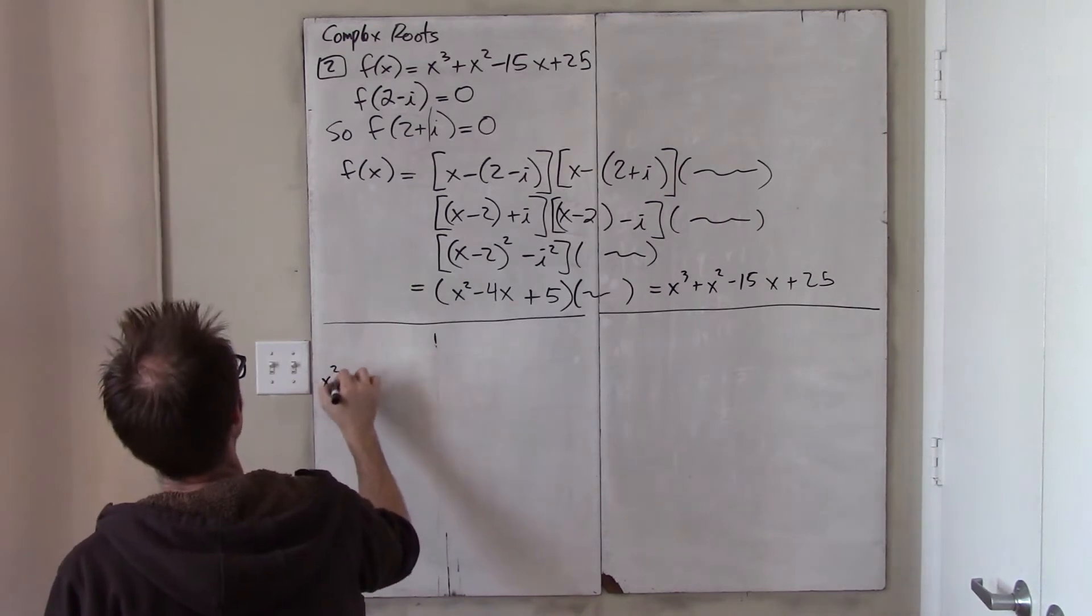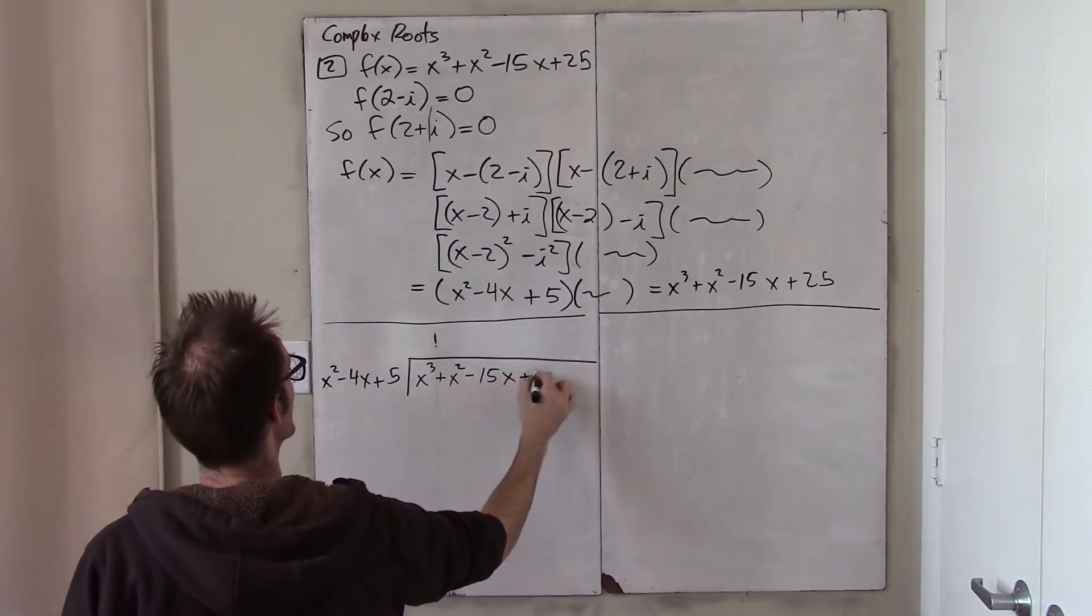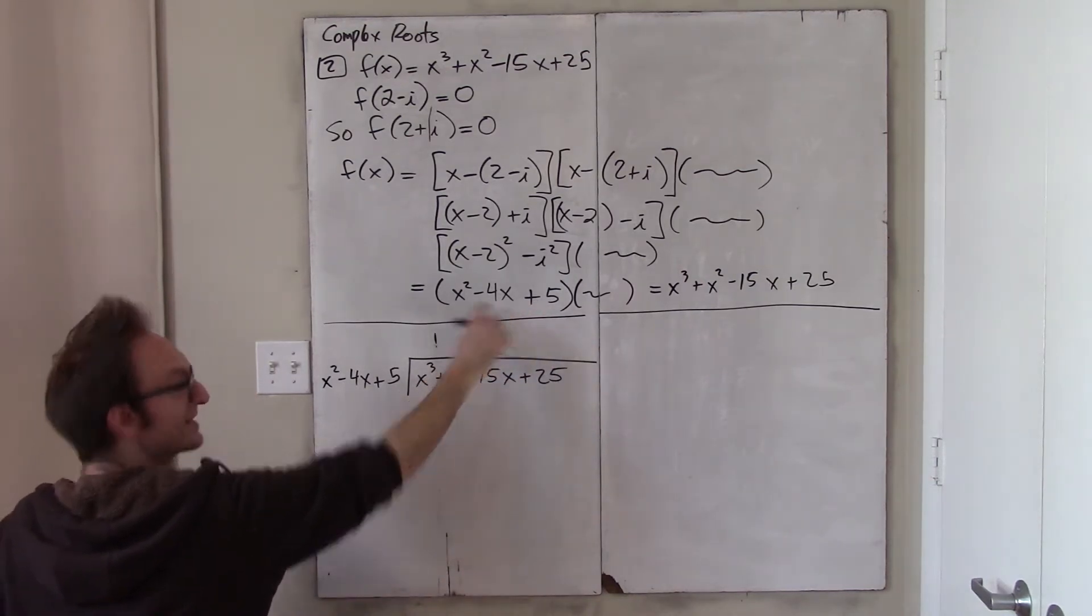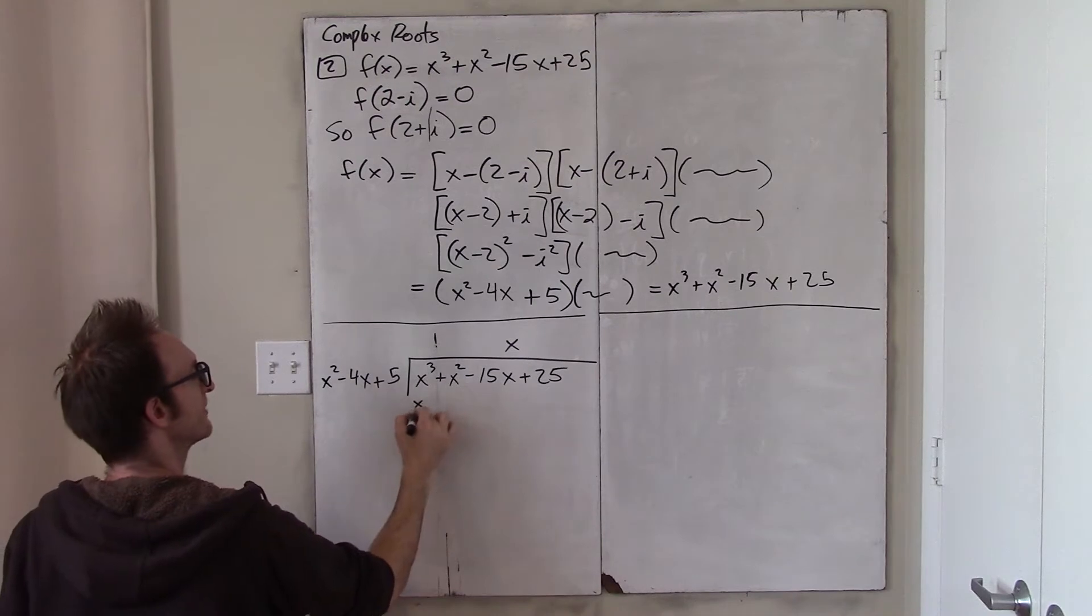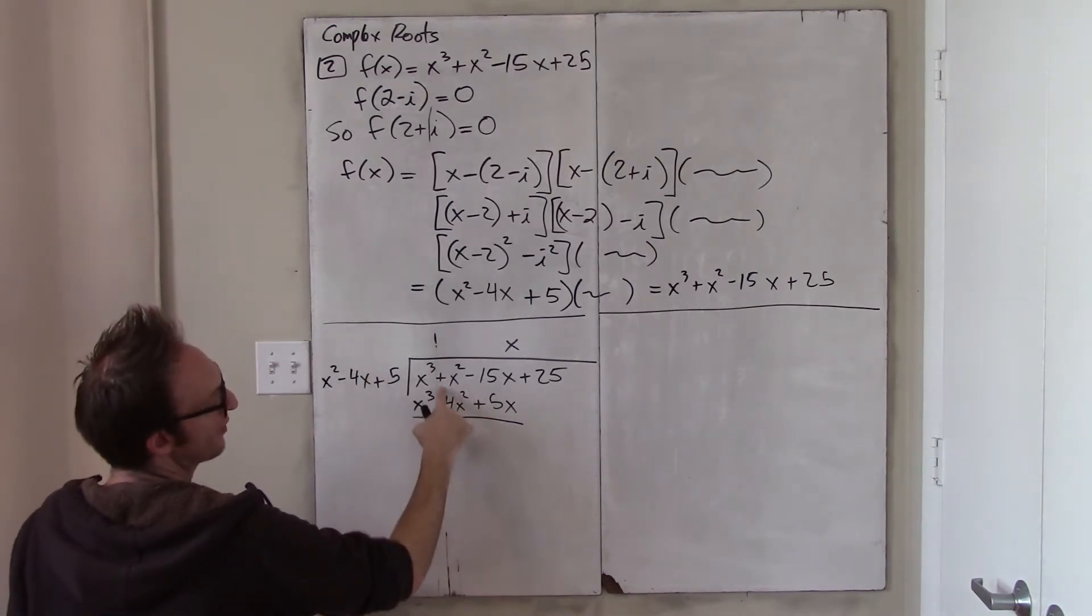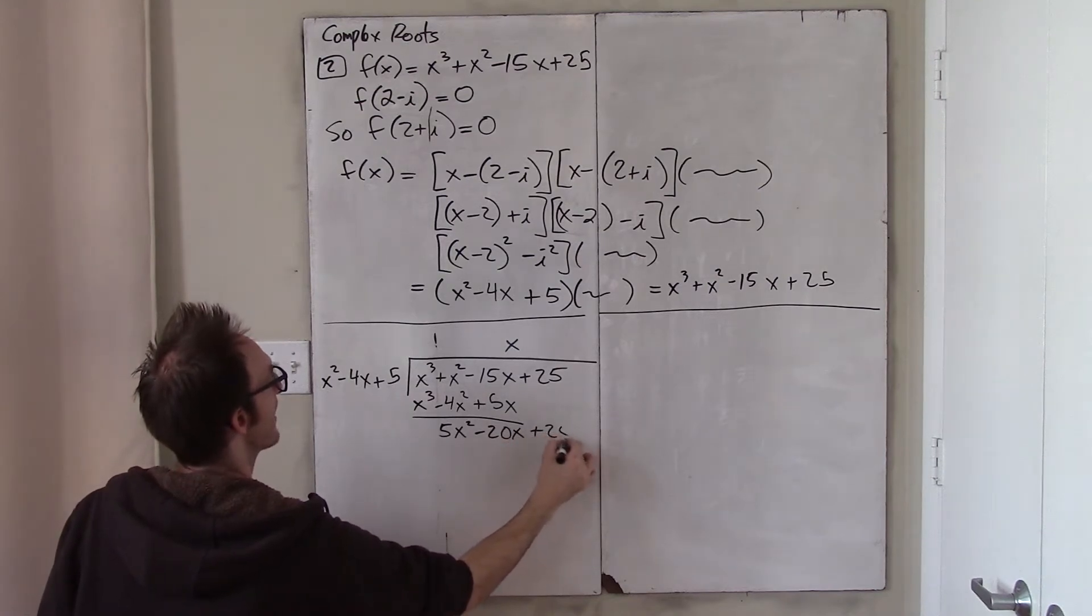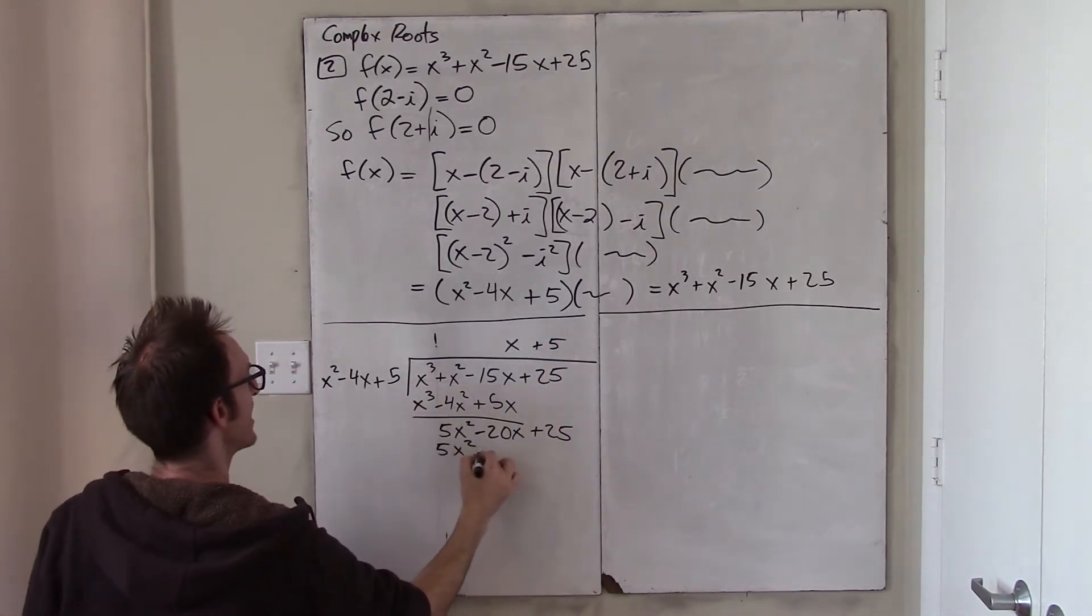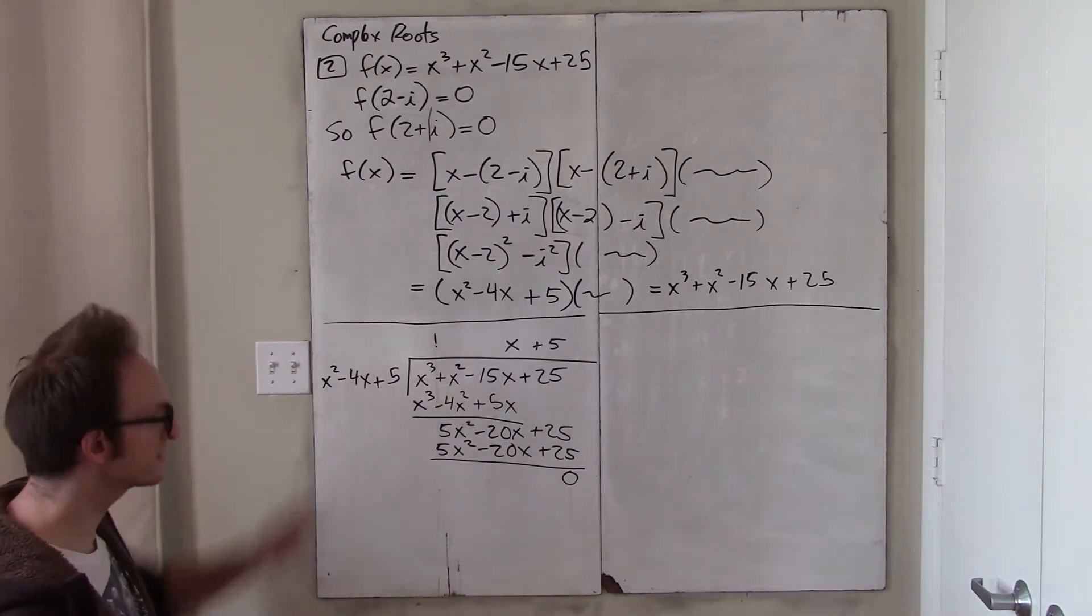So, let's do it. I think I can fit it right here. So, x squared minus 4x plus 5. I'm going to divide that into x cubed plus x squared minus 15x plus 25. And it has to go in evenly because that's what we've proven, that it is, in fact, a factor. So how many times does it go in? x squared goes into x cubed x times. Multiplying back through gives me x cubed minus 4x squared plus 5x. Now, we subtract, being very careful, 1 minus negative 4 is 5x squared. Negative 15 minus 5 is negative 20. And then plus 25.